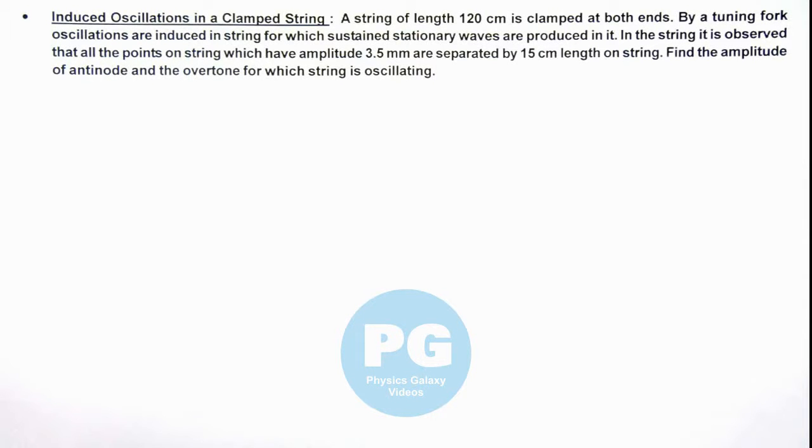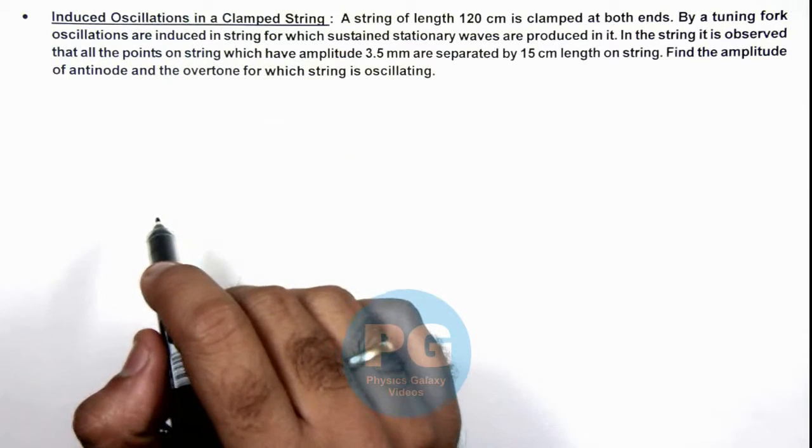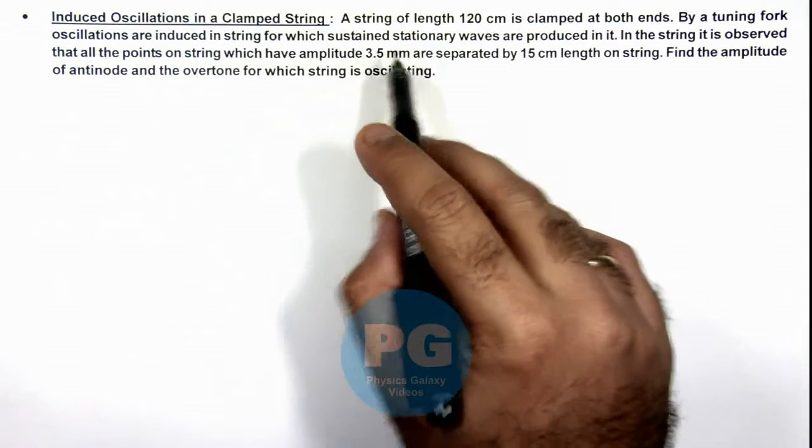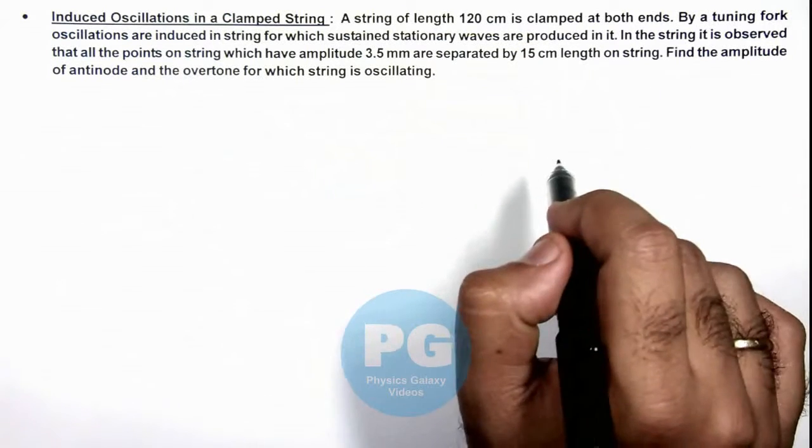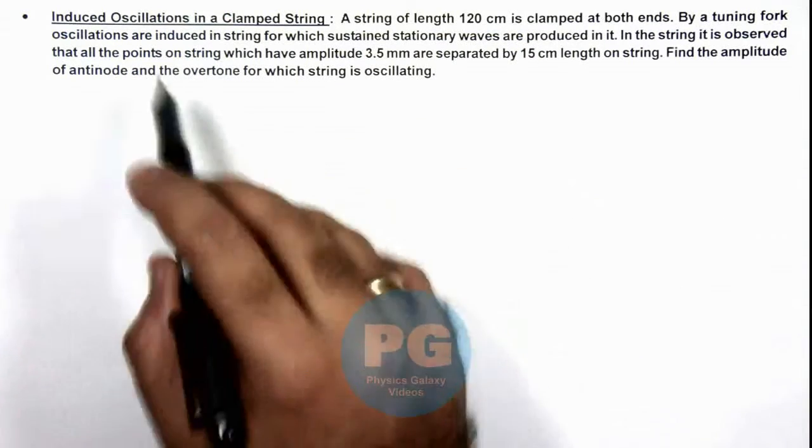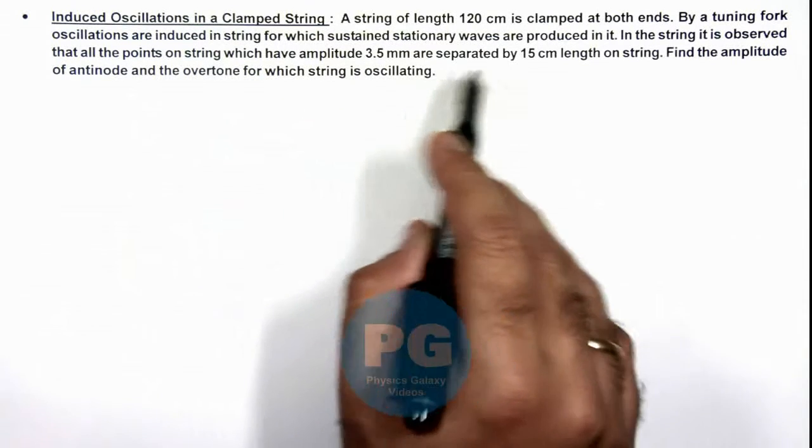In this illustration we'll analyze the induced oscillation in a clamped string. We are given that a string of length 120 centimeters is clamped at both ends, and by a tuning fork oscillations are induced in the string for which sustained stationary waves are produced.